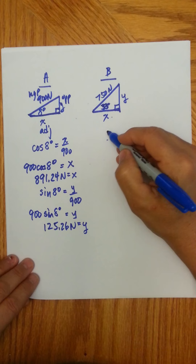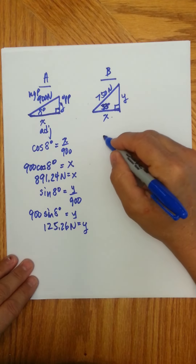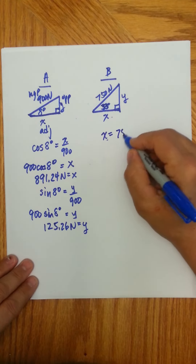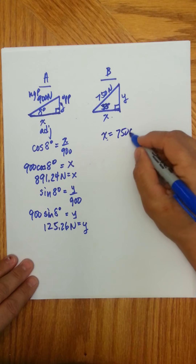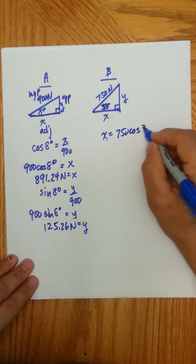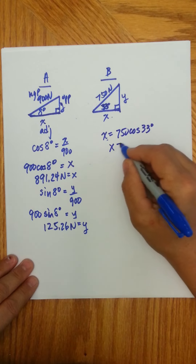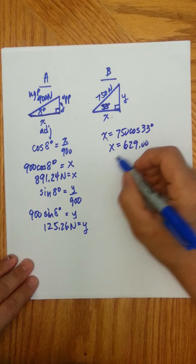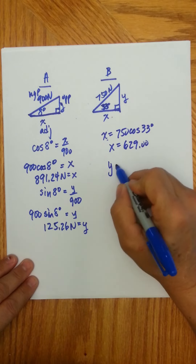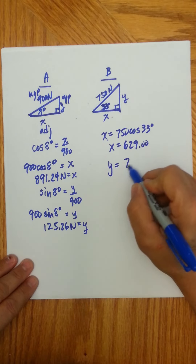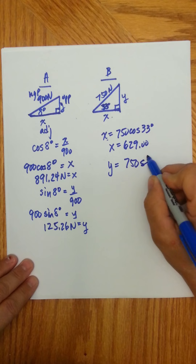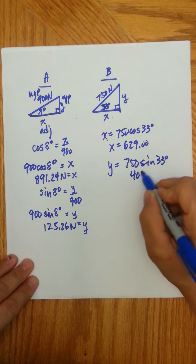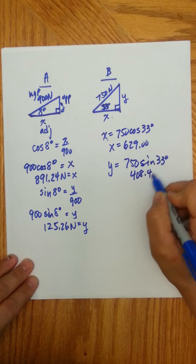Let's do the same thing for muscle B. X is going to be 750 cosine of 33 degrees, giving 629 newtons. Y is going to be 750 sine of 33 degrees, giving 408.48 newtons.